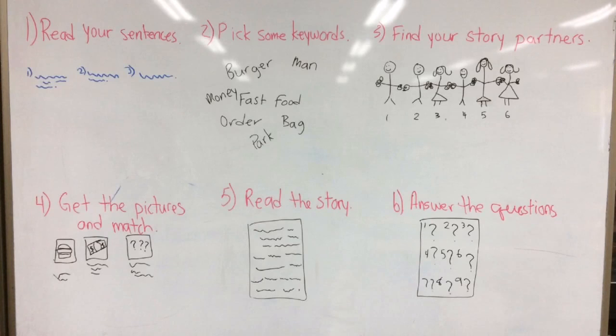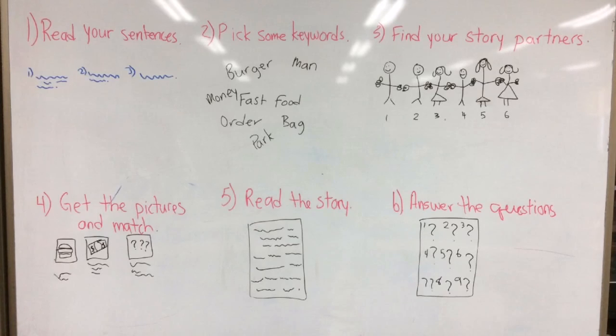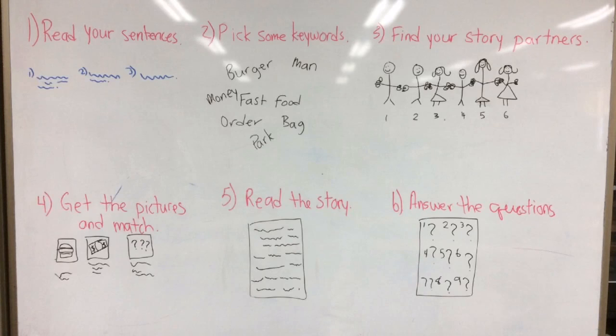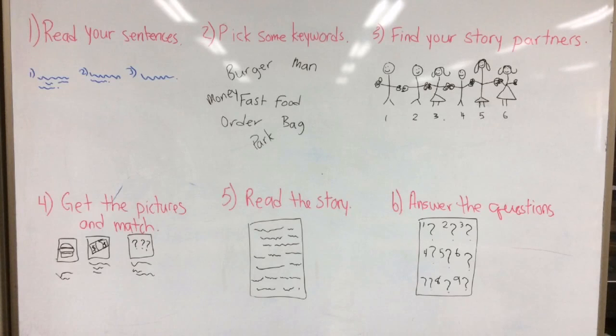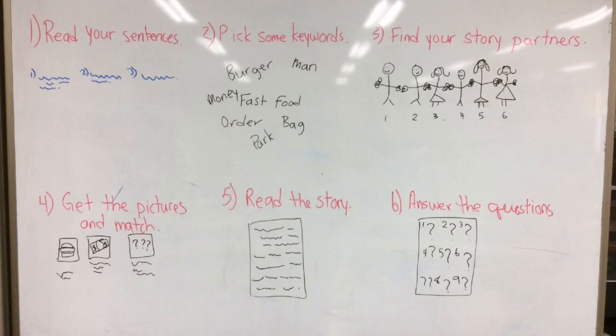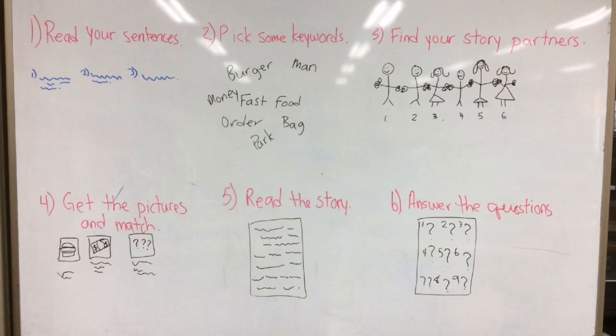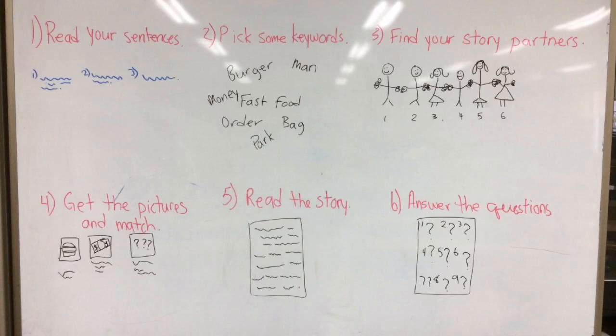Next, after reading, students pick some key words from those sentences. Third, students find the other five partners of their story by exchanging their key words.